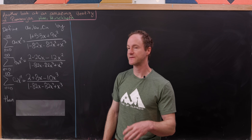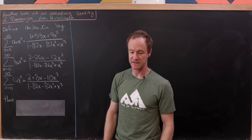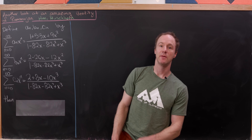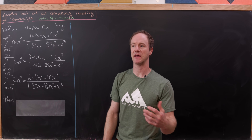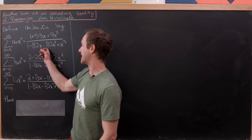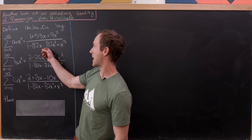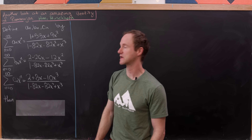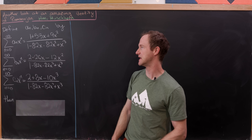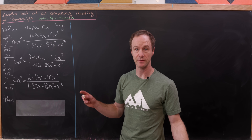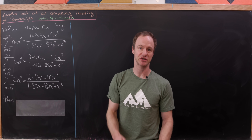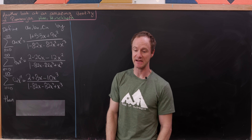We want to define three sequences of numbers, A_N, B_N, and C_N, by the following expansions of power series. If we expand the power series (1 + 53x + 9x²) / (1 − 82x − 82x² + x³), then the coefficients in that expansion will be defined to be A_N.